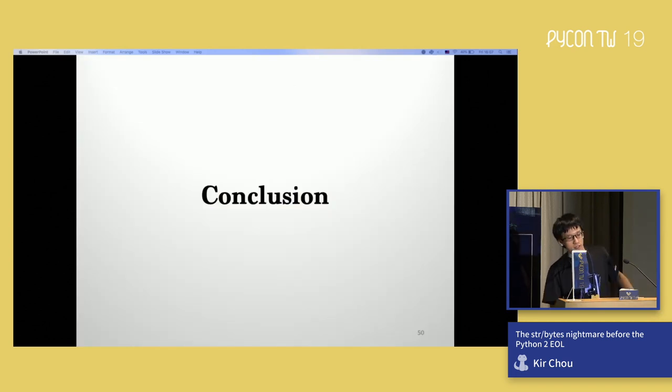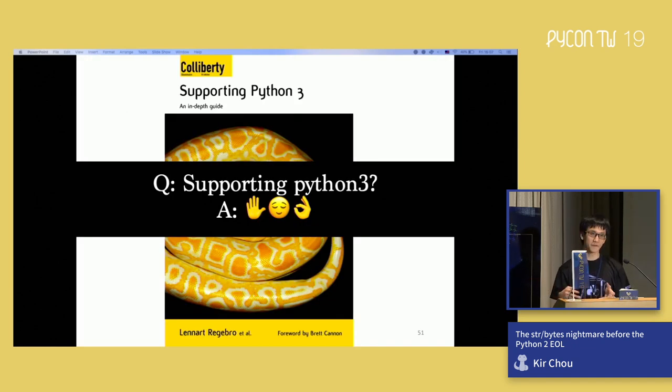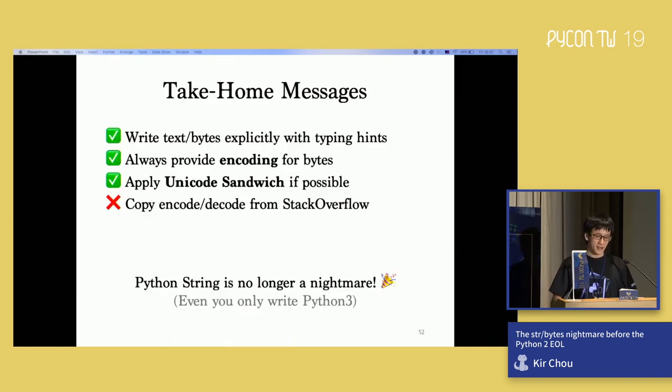All right. So the conclusion here. Today you learned and understood why Python 3 designed such a way. First thing is, if you're still confused like this code is Python 2 or this code is Python 3, it shouldn't be a problem because you should know there are five treatments. Understand the fundamental difference. Understand how to write string properly. And everything should be easy. The take home message here. Yet again, just mention. Write your text and bytes explicitly with typing hints. Always provide encoding for bytes because people cannot understand what's the encoding if you just have a thing stored in the memory. Try to apply a Unicode sandwich if possible. Although in my experience, Unicode sandwich is not that easy for all the case. So sometimes it's not really able to apply that. But try to do that if possible.